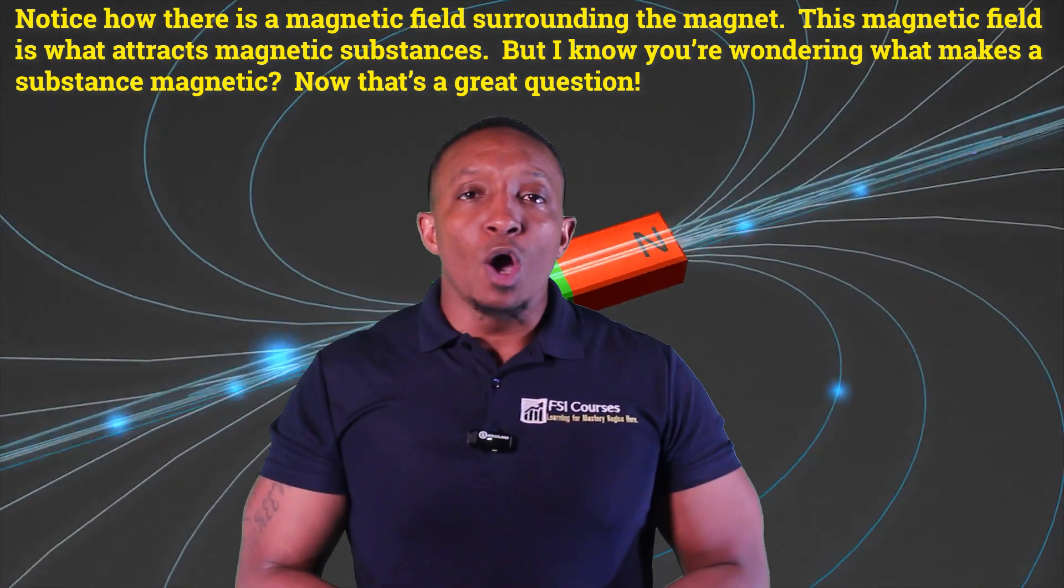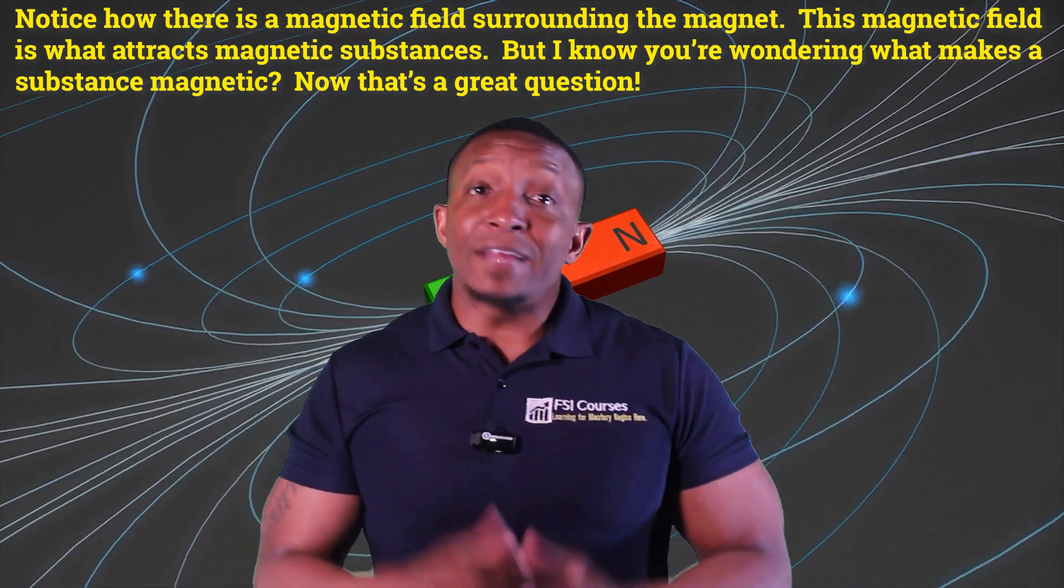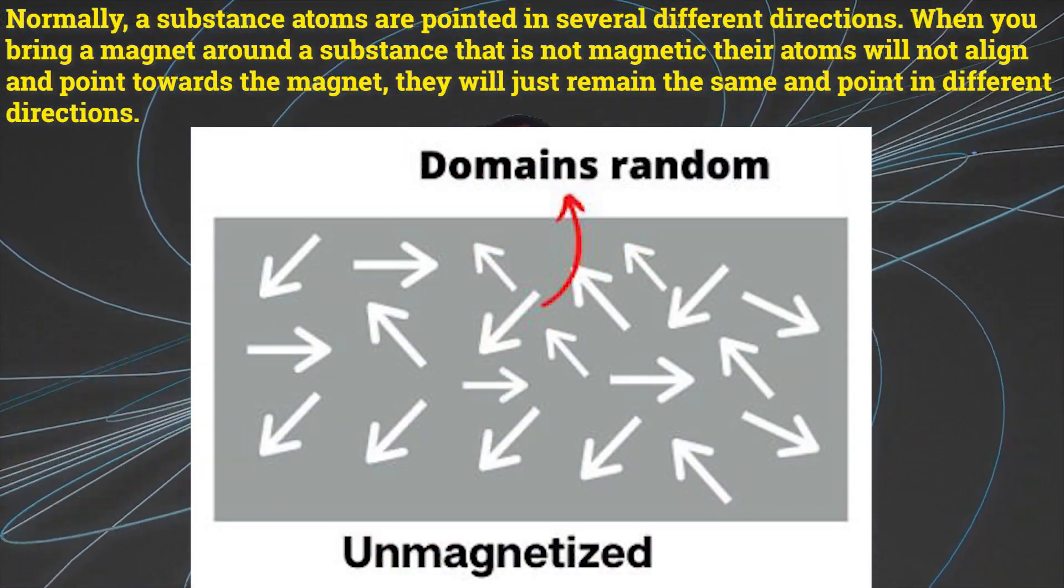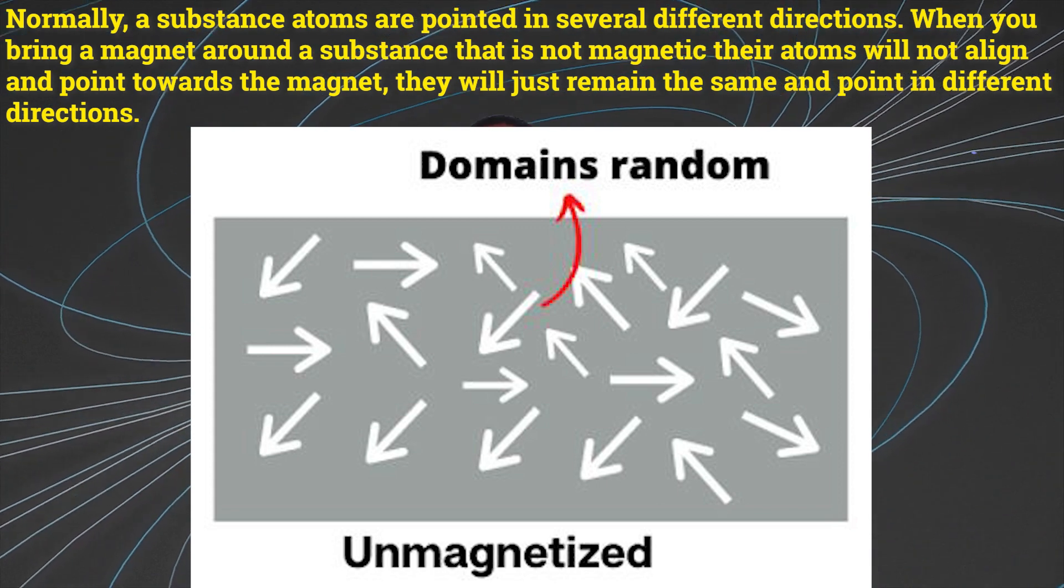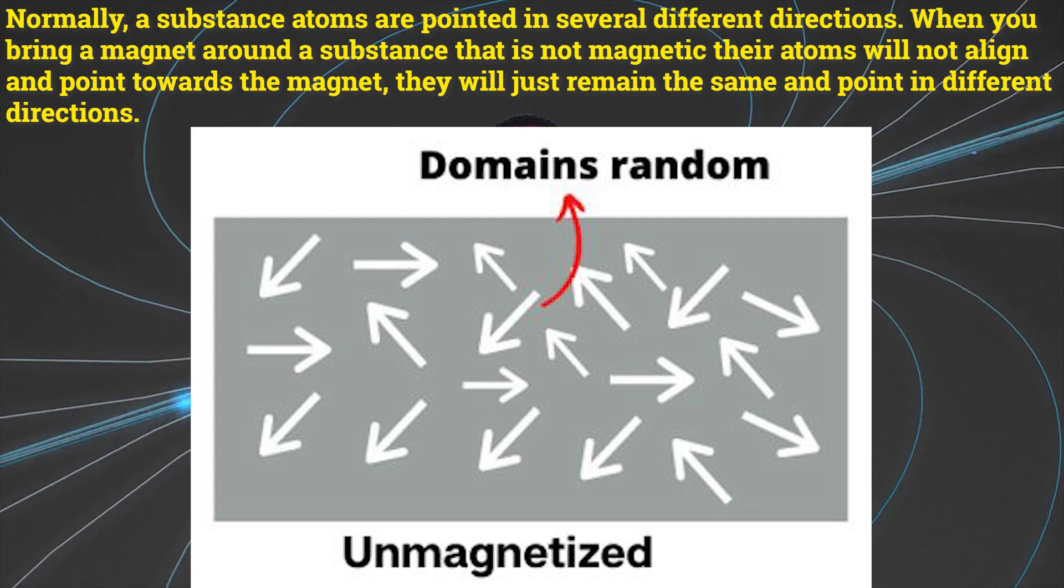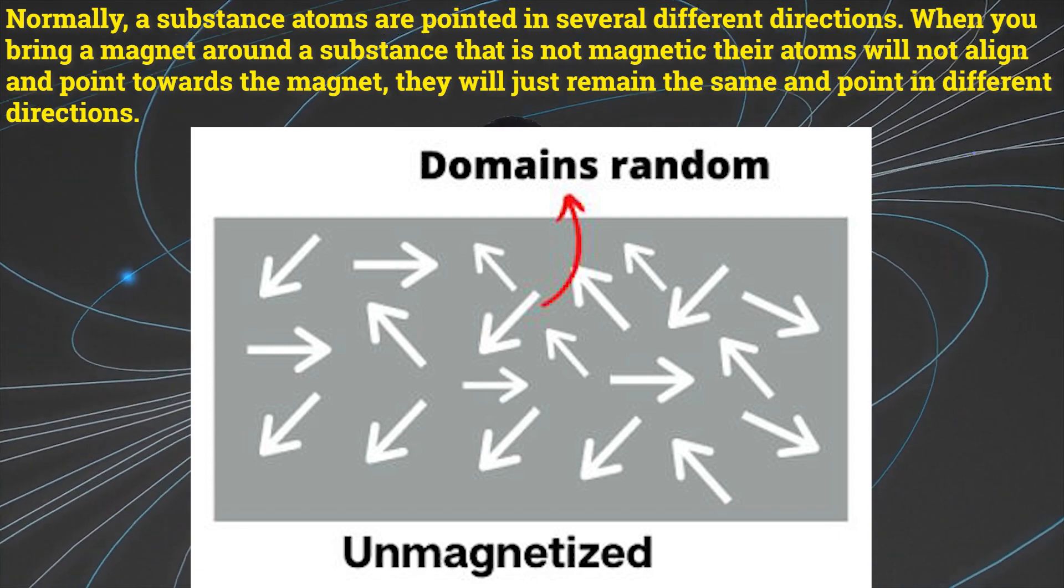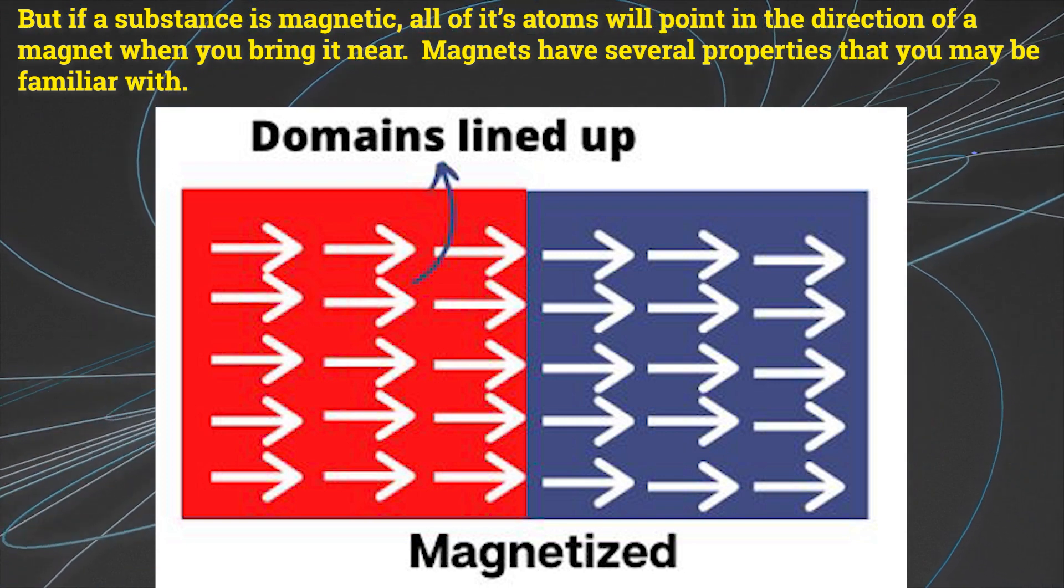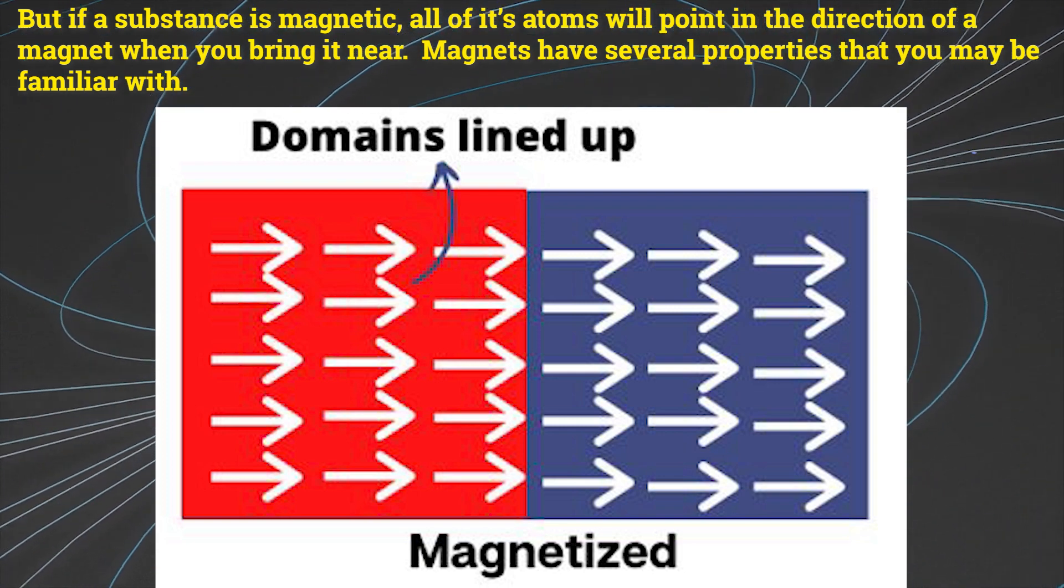But I know you're wondering what makes a substance magnetic? Now that's a great question. Normally a substance's atoms are pointed in several different directions. When you bring a magnet around a substance that is not magnetic, their atoms will not align and point towards the magnet, they will just remain the same and point in different directions. But if a substance is magnetic, all of its atoms will point in the direction of a magnet when you bring it near.